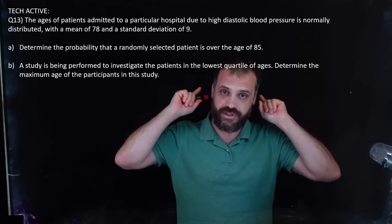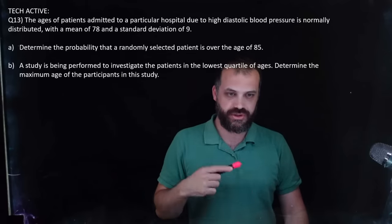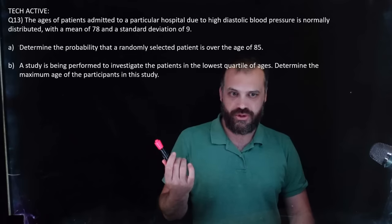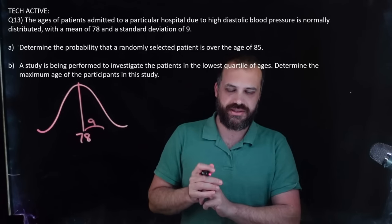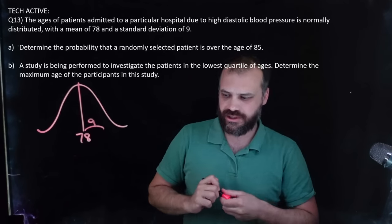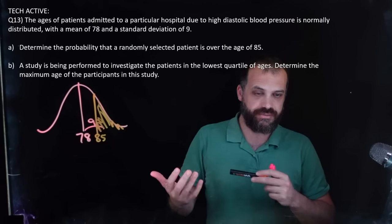So first short response. It is tech active. Have a try. I'm going to jump into it. Now at the risk of being a broken record, when it comes to normal distributions, if you do not draw a picture, what are you doing? Seriously. So we have a normal distribution. We have a mean of 78. And what I like to do with my standard deviation is just kind of draw it in as this weird kind of like nine, right? Because that tells us how spread out this is. Determine the probability that a randomly selected patient is over the age of 85. So 85 is about there. And we want over the age of 85. Drawing a picture, you can't make a mistake.